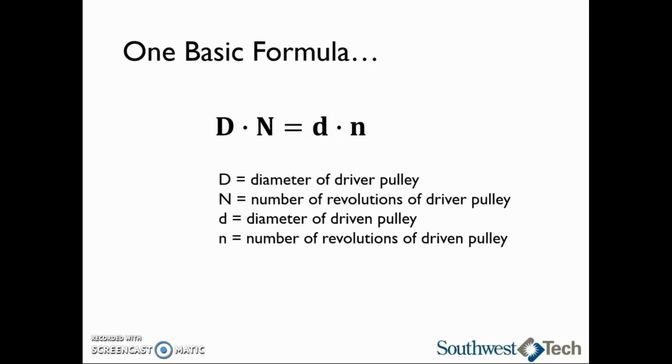Our basic equation is capital D times capital N equals lowercase d times lowercase n, where capital D is the diameter of the driver pulley, capital N is the number of revolutions per minute of the driver pulley, lowercase d is the diameter of the driven pulley, and lowercase n is the number of revolutions per minute of the driven pulley.